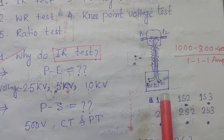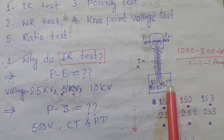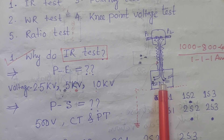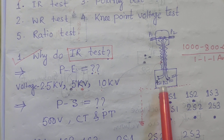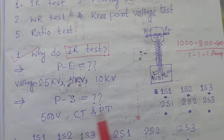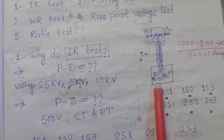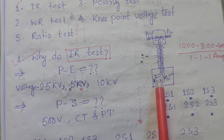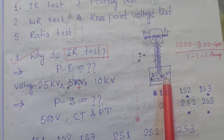I have drawn a picture of a current transformer here. The primary terminals are P1 and P2, and the secondary terminals are 1S1, 1S2, 2S1, 2S2, and so on, as per requirements. The number of cores can be increased - two core CT, three core CT, four core CT, five core CT - depending on protection requirements. The first core is used for metering and the second core is used for protection purpose.